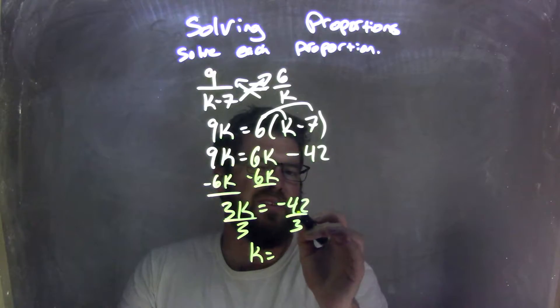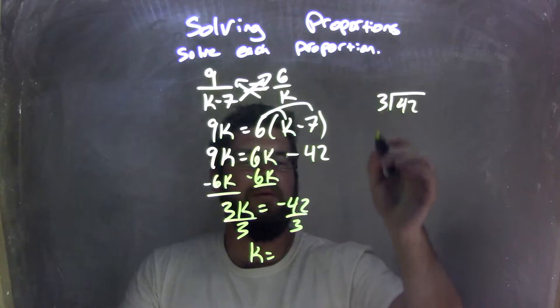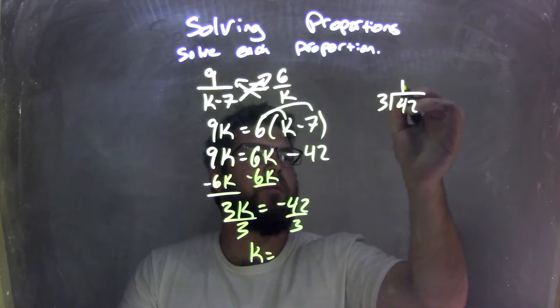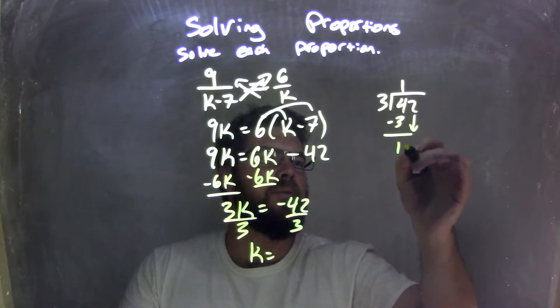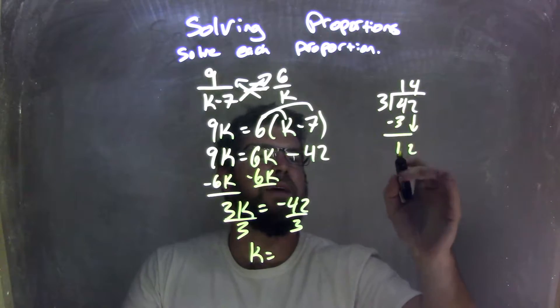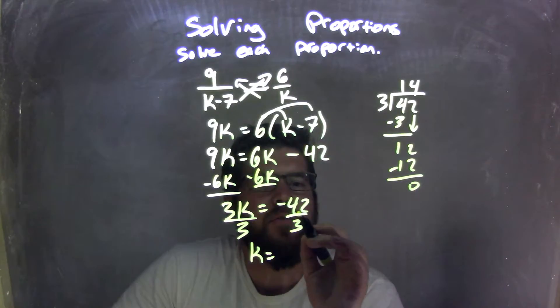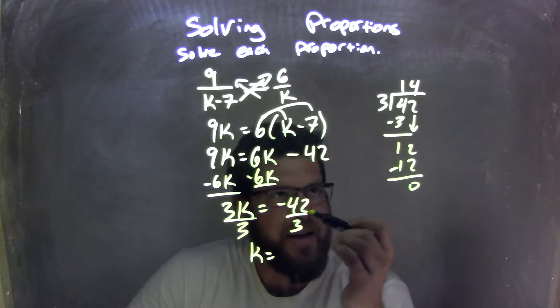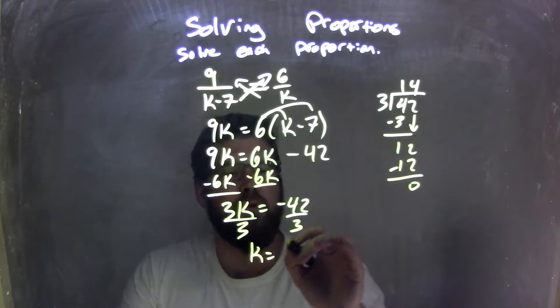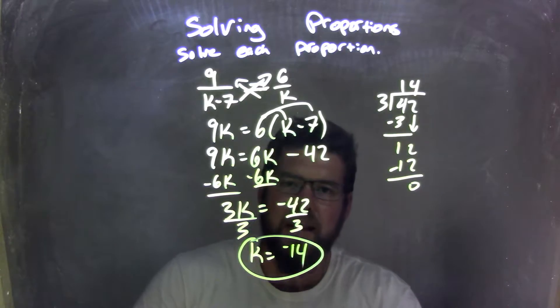Well, I'm left with, what's 3 into 42? 3 goes into 42, let's write it right here. 3 goes into 4 one time, 1 times 3 is 3. I subtract them, I get 1, bring down the 2, and 3 goes into 12 four times. 4 times 3 is 12. Fantastic. We're left with 0. And so, negative 42 divided by 3 is negative divided by positive, which is going to be negative, so we have negative 14. And so, my final answer here is k equals negative 14.